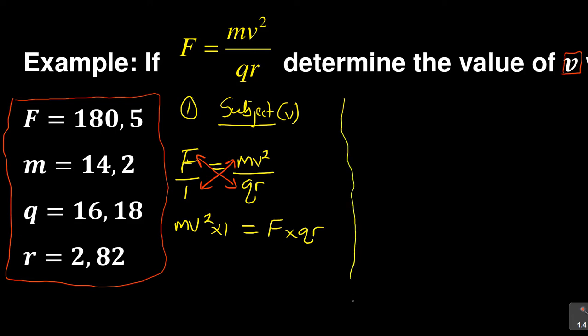When you have done that, the aim is to always remain with v². So you divide by m on both sides, such that we have v² = Fqr/m.